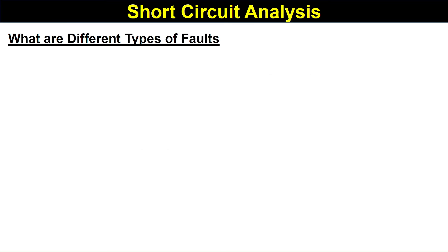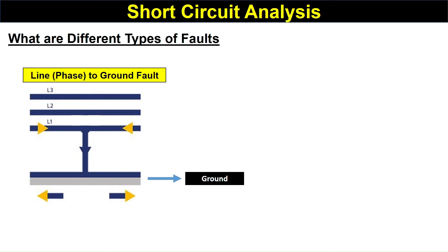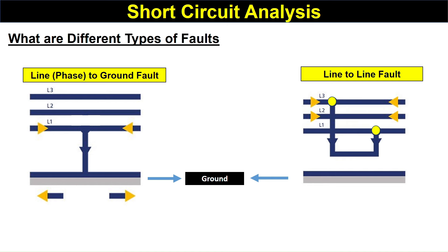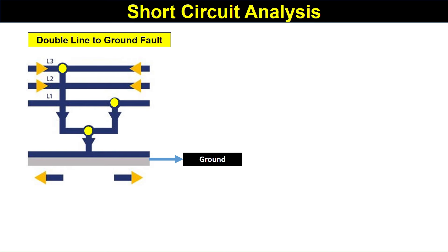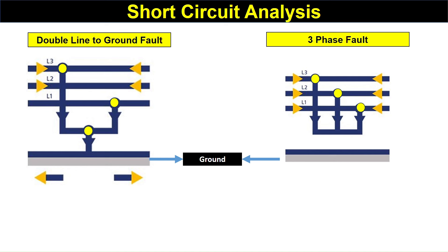There are different types of faults. The first is the line-to-ground fault, where one line such as the R, Y, or B phase gets connected with the ground. The second is the line-to-line fault, where two lines get connected to each other. The third is the double-line-to-ground fault, where two lines get connected to each other and also to the ground. The fourth is the three-phase fault, where all three phases are connected to each other.